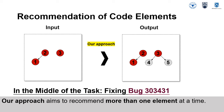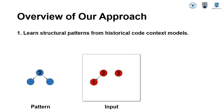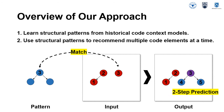In contrast to these approaches, our approach aims to proactively form code context models, that is, recommending more than one element at a time. The basic idea of our approach is we first learn structural patterns from historical code context models, as shown in the left graph with blue nodes, and then use those structural patterns to recommend multiple code elements at a time by doing subgraph matching to form the code context model.